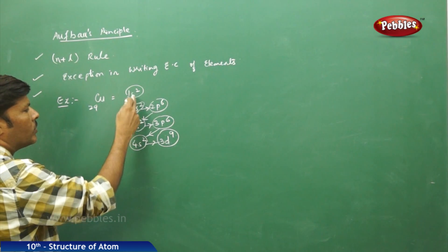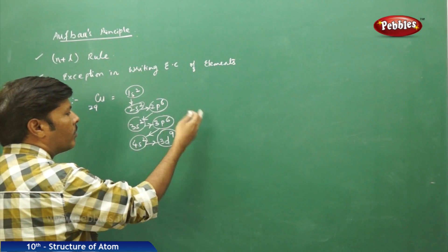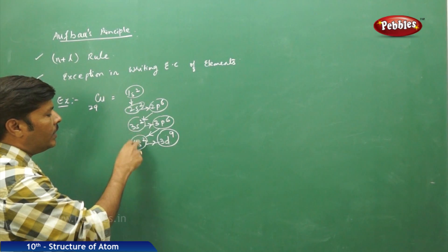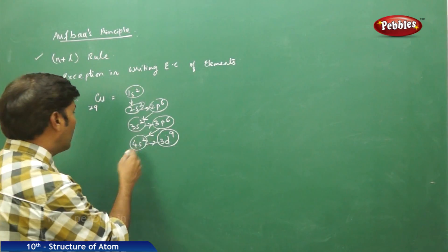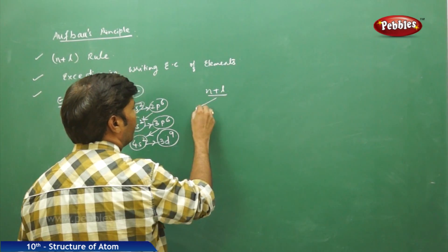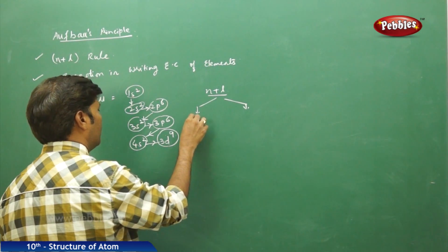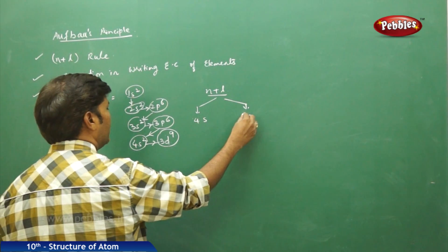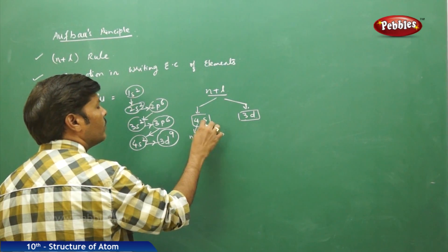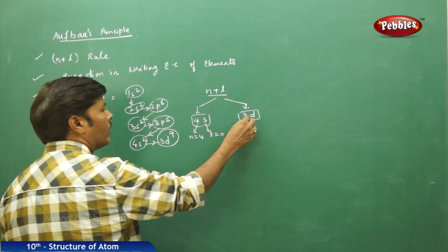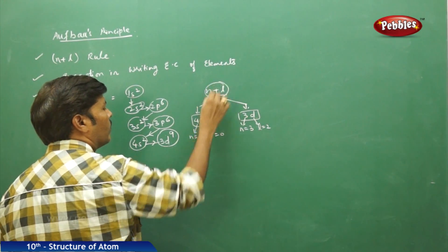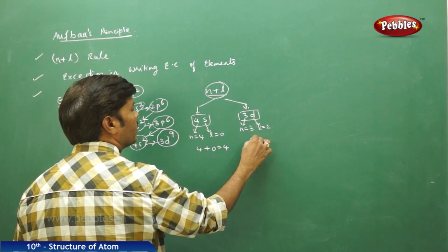Starting with the 1s orbital, then 2s, 2p, 3s, 3p. After 3p, we are supposed to fill electrons in the 3d orbital, but before that we are filling electrons in the 4s orbital. Applying the n plus l rule for both 4s and 3d: for 4s, n equals 4 and l equals 0 (s orbital); for 3d, n equals 3 and l equals 2 (d orbital).